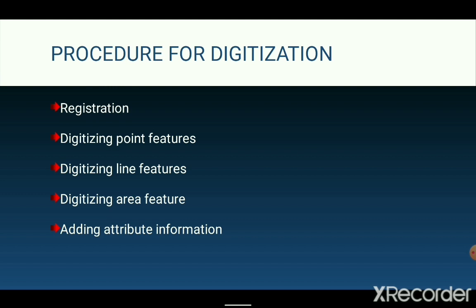Stage 2 involves digitizing major point features or point entities, such as spot heights, meteorological stations, or post offices, each as a single digitized point. Stage 3 involves digitizing most line features, such as roads, rivers, or networks, as a series of points joined to form a line segment. In some GIS packages, lines are referred to as arcs and the start and end points are referred to as nodes.